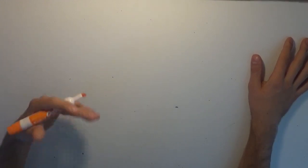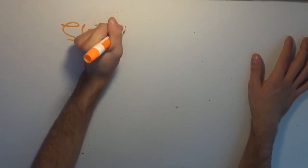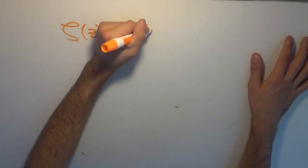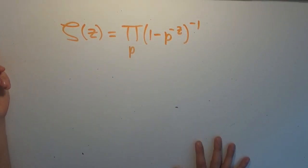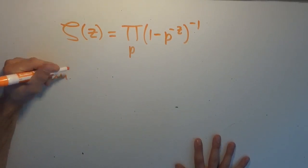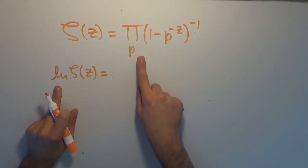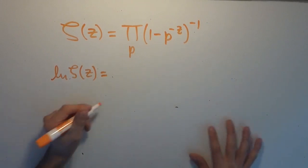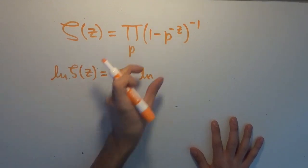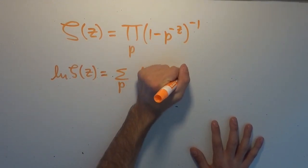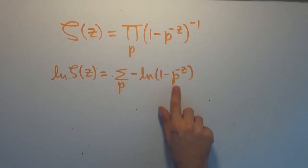What we need to do is consider the product version of the Riemann zeta function. So we need that zeta of z is equal to the product over the primes of 1 minus p to the minus z, to the negative 1. And all we're going to do now is just take the natural logarithm of both sides. So we're going to be considering log of zeta of z, and that's going to be equal to — the logarithm of a product is the sum of all the logarithms. So we can rewrite this as a sum over the primes of minus the logarithm of 1 minus p to the negative z.